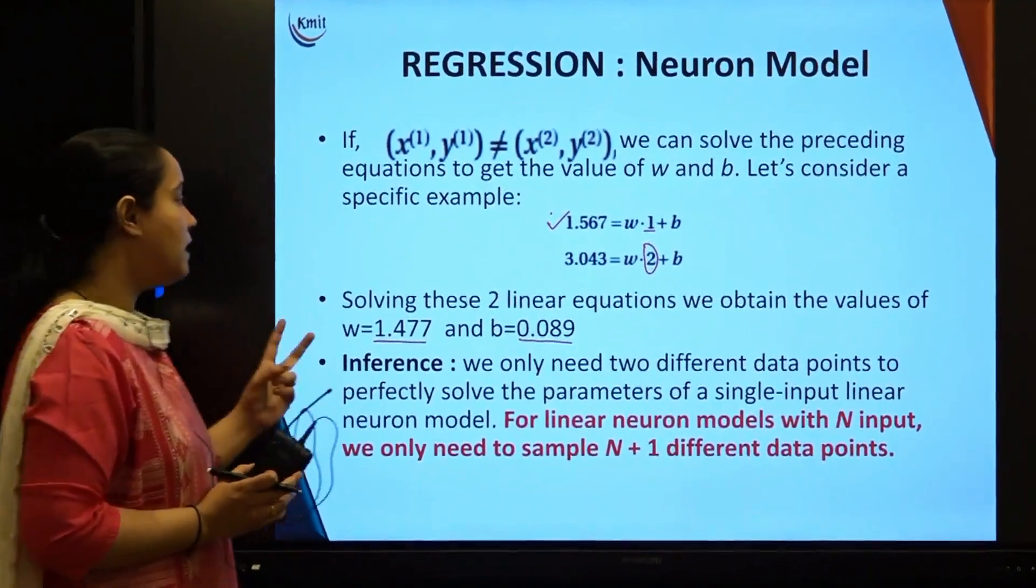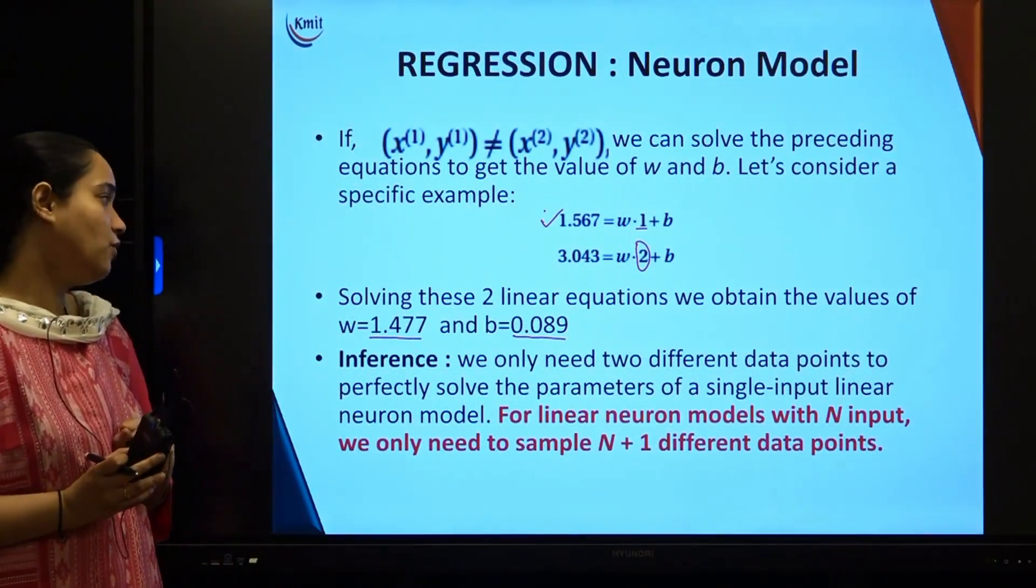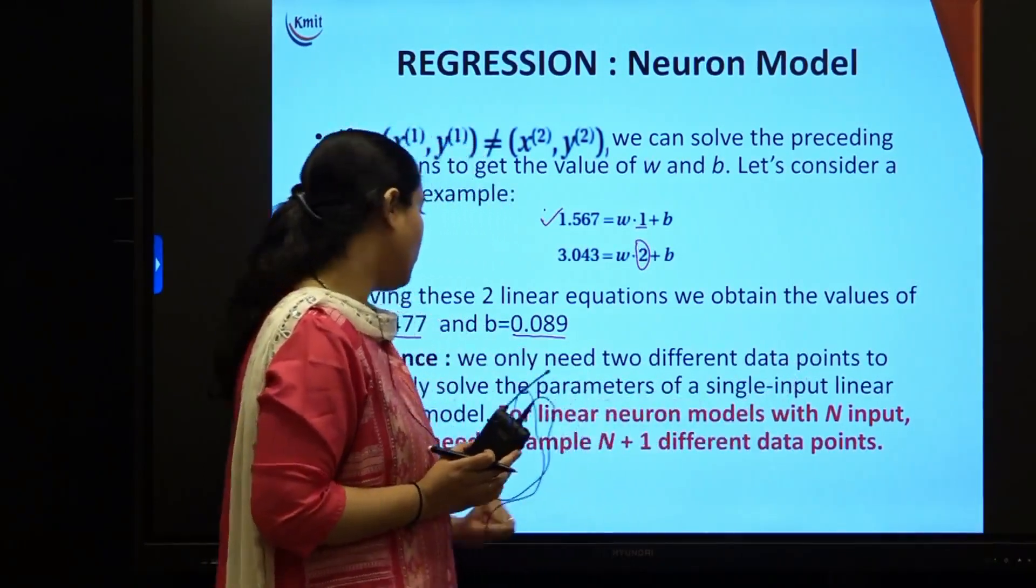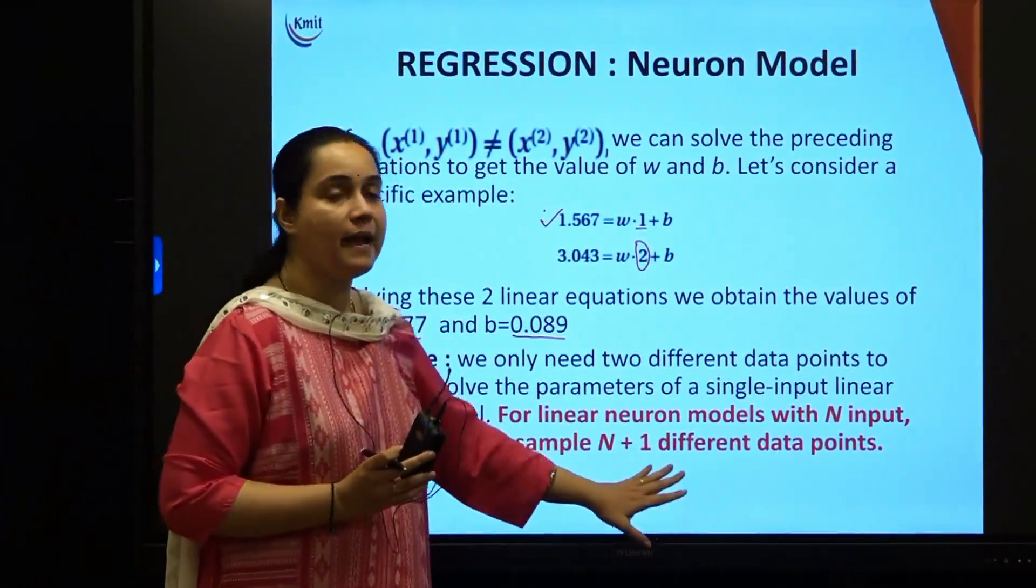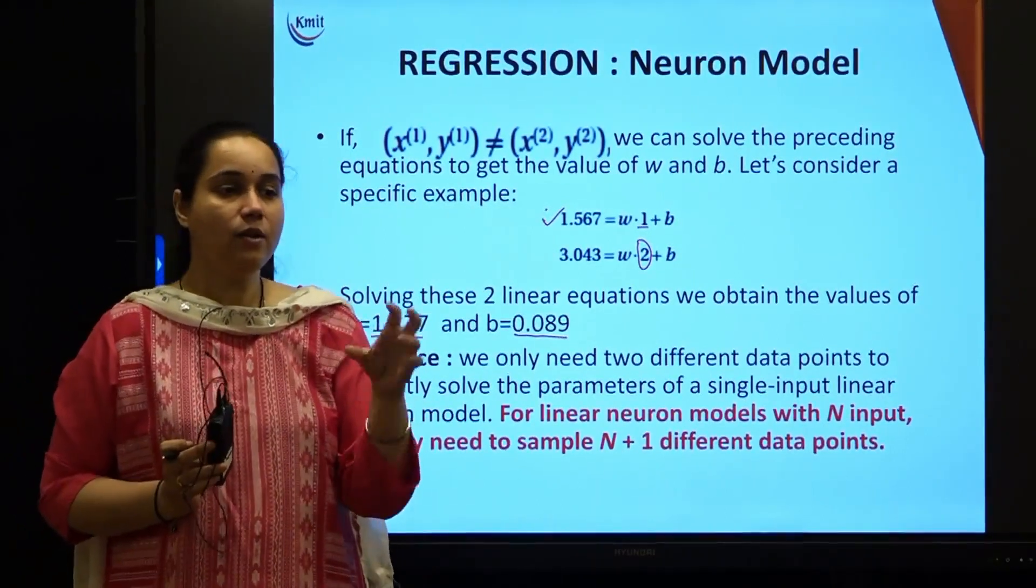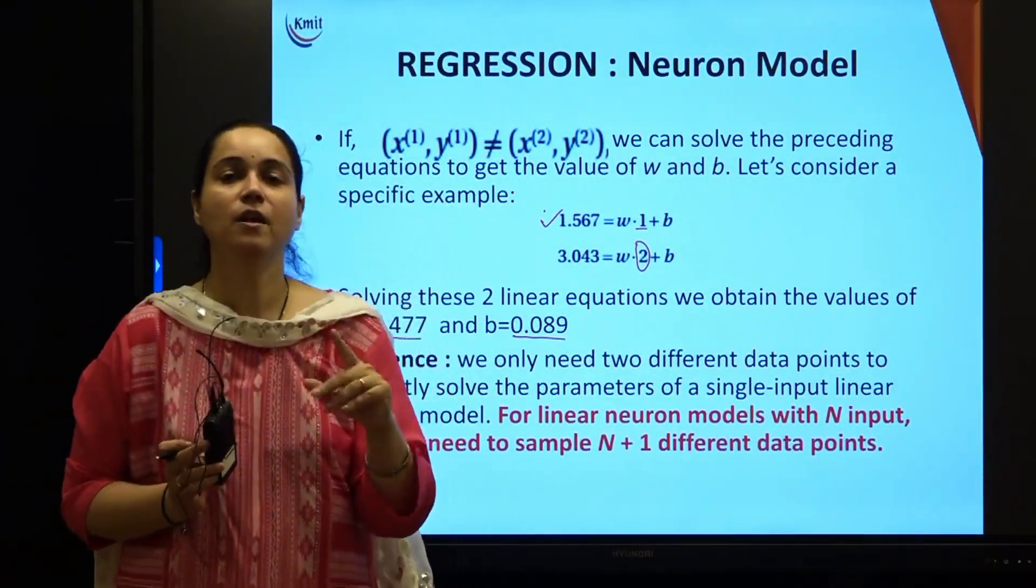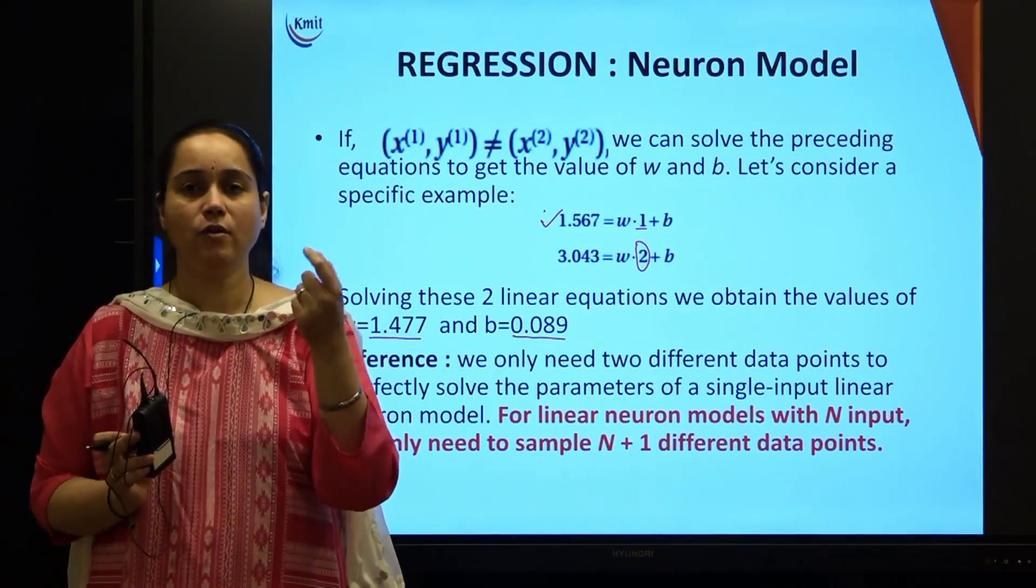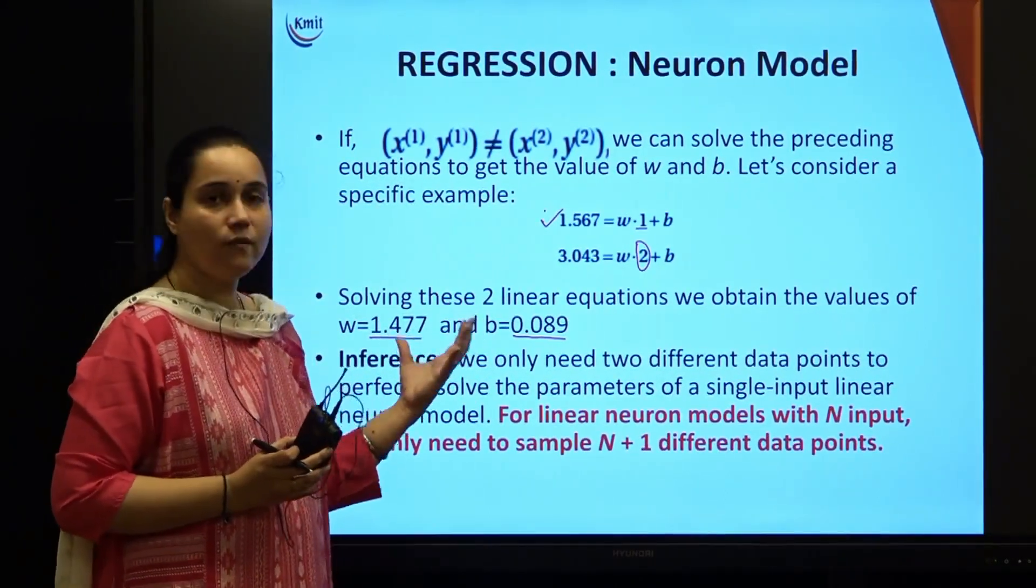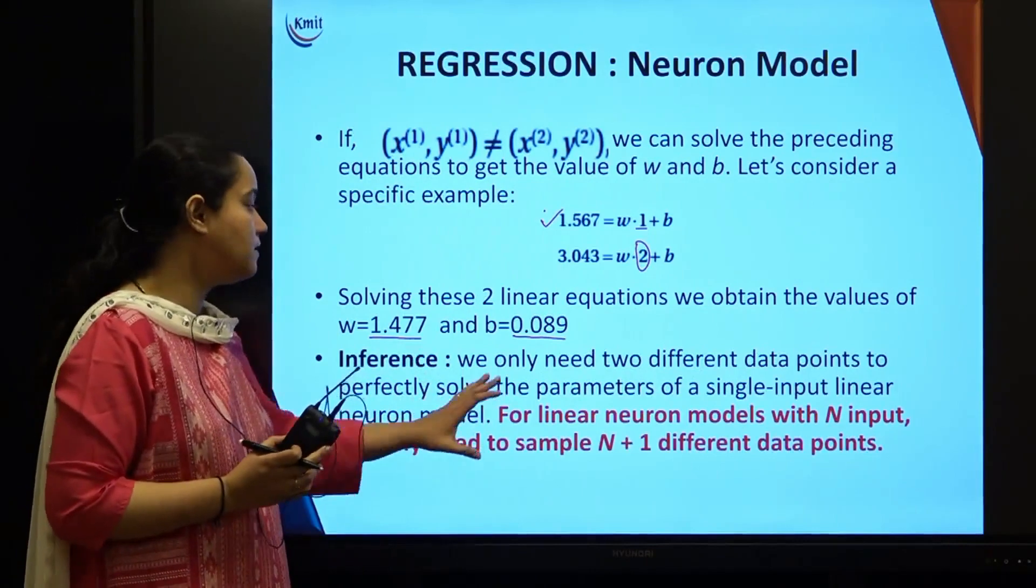The inference here is we only need two different data points in order to perfectly solve the parameters of a single input linear neuron model. I conclude that for a linear neuron model with n inputs, we only need to sample n plus 1 data points. If you had a simple linear model, that is a straight line, then only two particular points will help you solve this particular model by getting your weights and biases. This was a simple neuron model solving your simple regression task.